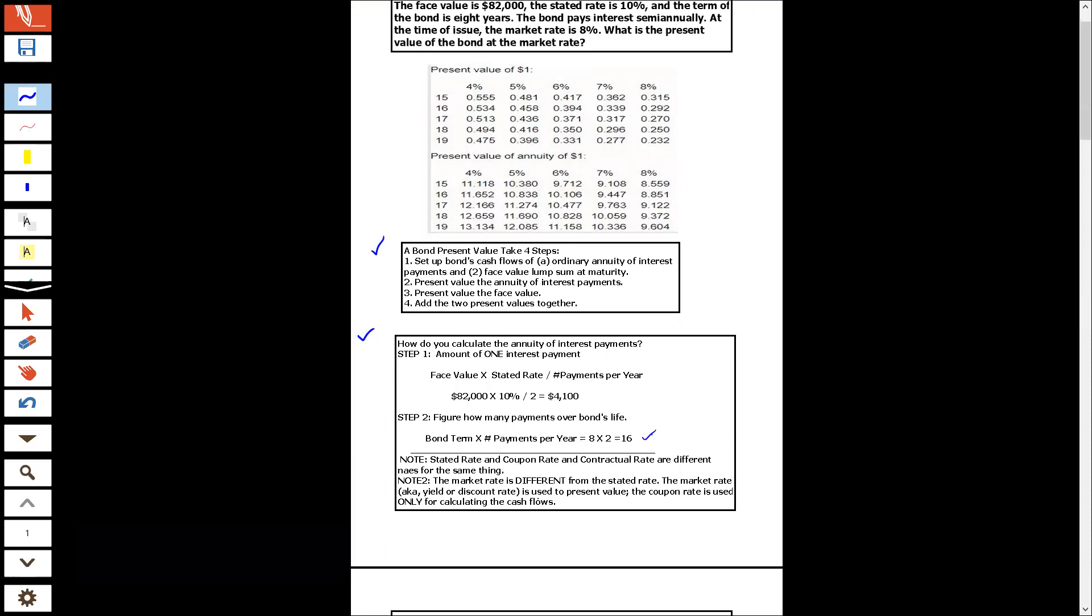And here's a little note just for the terminology. Stated rate, coupon rate, contractual rate are different names for the same thing. The market rate is different from the stated rate. The market rate, also known as the yield or the discount rate, is the rate you use to figure out the present value. It's the rate you'll use to use that chart up there with the time value factors.